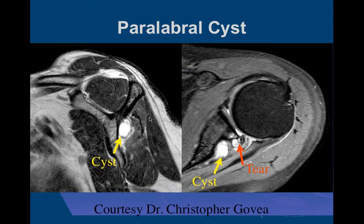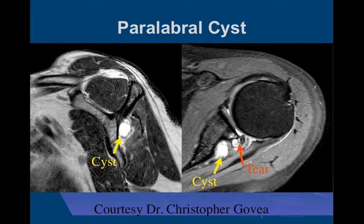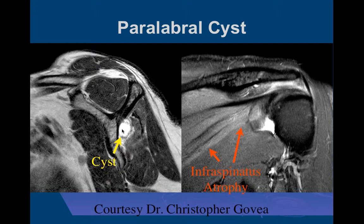One characteristic finding to look for is the infraspinatus muscle. In Major League baseball players, either from strain or from the paralabral cyst compressing the nerve supply, you can get signal changes within the infraspinatus muscle leading to severe atrophy. For some reason it's common to see atrophy of the infraspinatus but not the supraspinatus - probably because these cysts tend to be in the spinoglenoid notch, not in the suprascapular notch, so they compress the nerve distal to where it takes off for the supraspinatus.